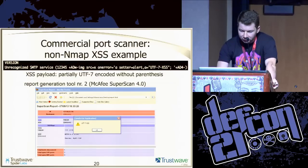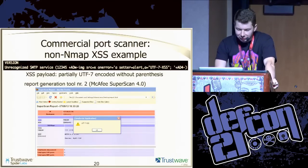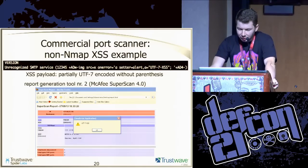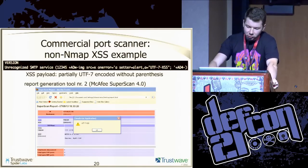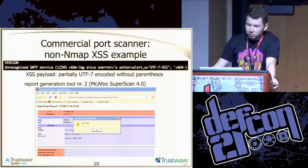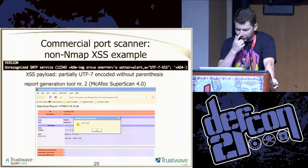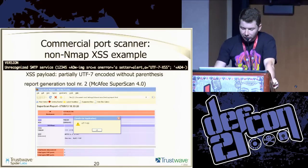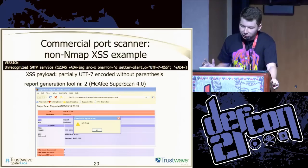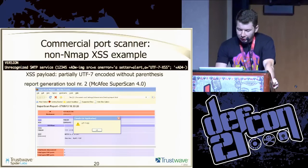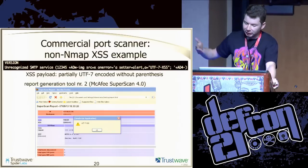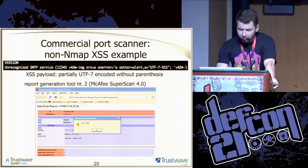The next example is non-nmap — we don't stick to nmap all the time, it's just proof of concept. You can exploit, for example, the McAfee SuperScan. It was fixed a few days ago. But basically if anyone would scan your system with this particular tool and later generate a report, you will also be able to inject JavaScript code into their context. You can then use BeEF or any other tool to do further exploitation.